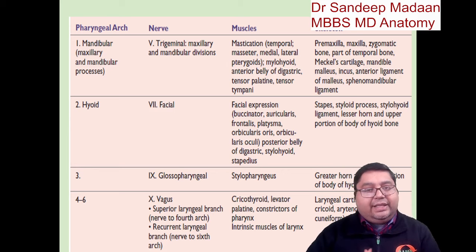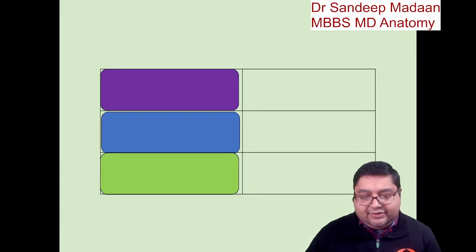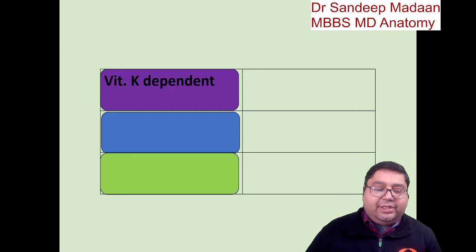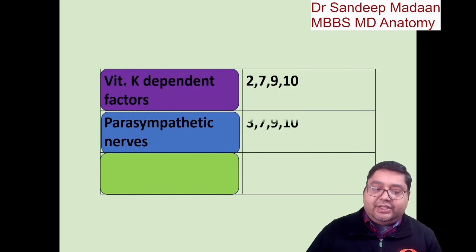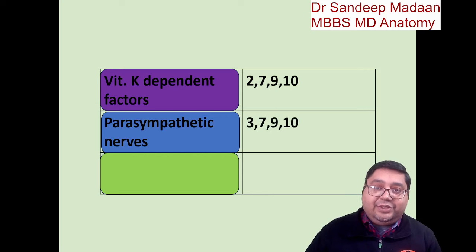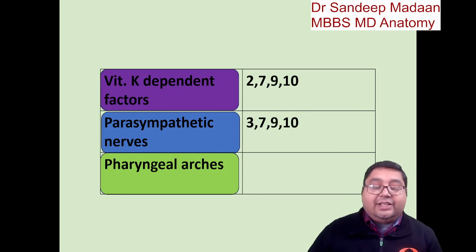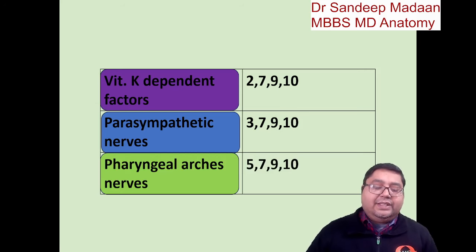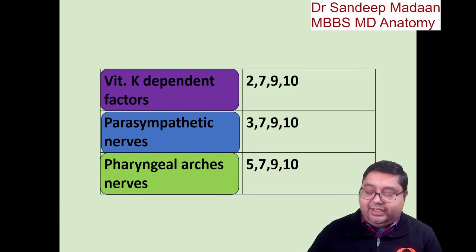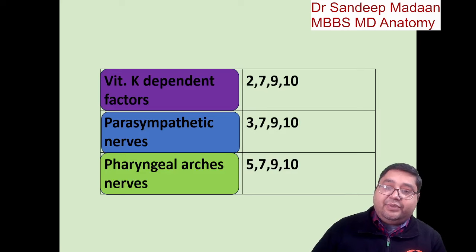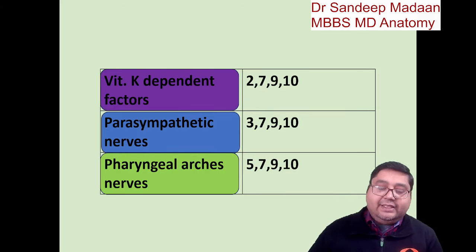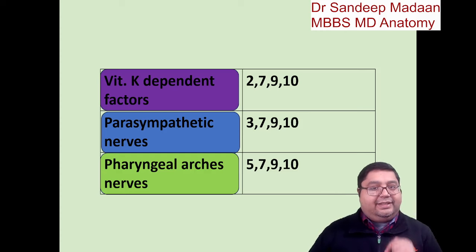First, let us look at the nerve supply. We have the vitamin K dependent factors which are 2, 7, 9, 10. We have the parasympathetic nerves which are 3, 7, 9, 10. But if you add only 2 and 3, you will get the pharyngeal arches nerve supply: 5, 7, 9, 10 — so it is kind of in a sequence. For the first arch we have the mandibular nerve, second arch the facial nerve, then glossopharyngeal, and for the fourth and sixth they are branches of vagus — superior laryngeal and recurrent laryngeal.